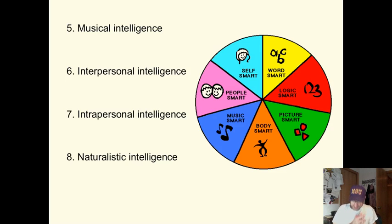And the last one, naturalistic intelligence, is the ability to recognize and classify living things out there, as well as sensitivity to the features of the natural world. A scout, a guide, a farmer, an environmentalist, all use this type of thinking.